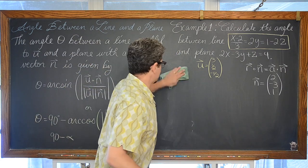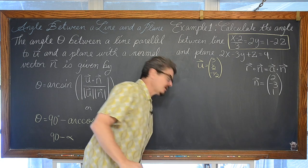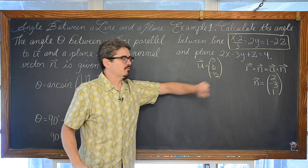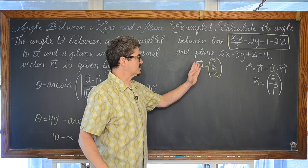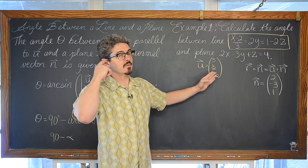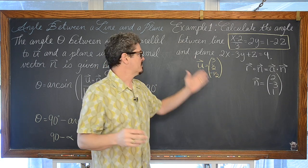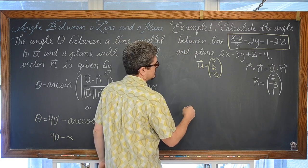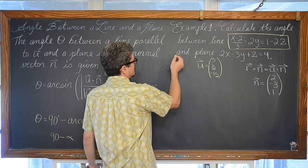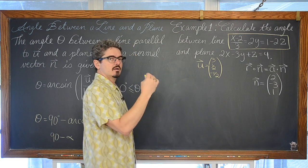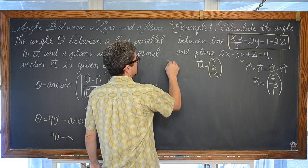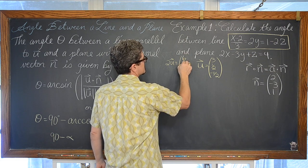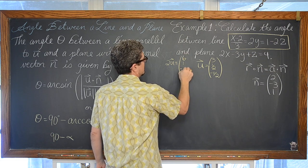We've pulled the directional vector out of the line equation. To avoid working with fractions, I'll just multiply vector u by 2 — that won't change the angle between u and n. So 2u = (6, 1, −1).